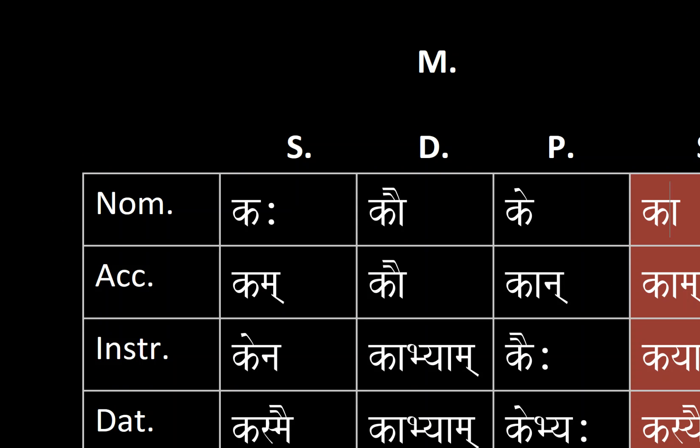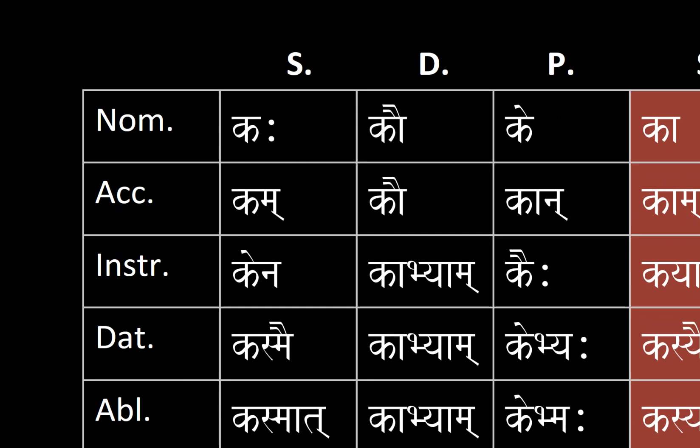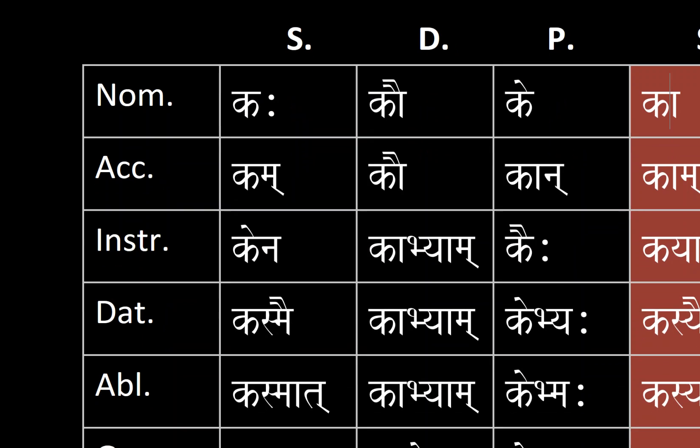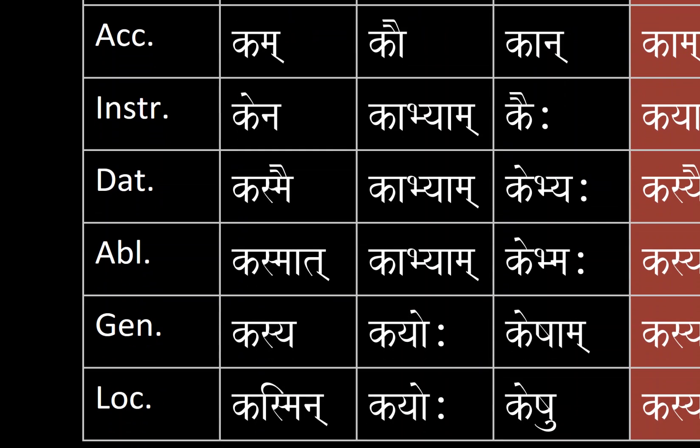For instrumental singular, dual, and plural we have kena, kābhyām, kaiḥ. For dative singular, dual, and plural we have kasmai, kābhyām, kebhyaḥ. For ablative singular, dual, and plural we have kasmāt, kābhyām, kebhyaḥ.